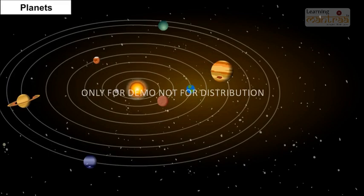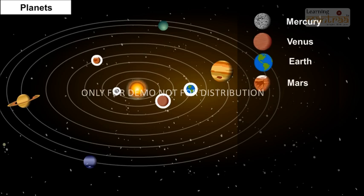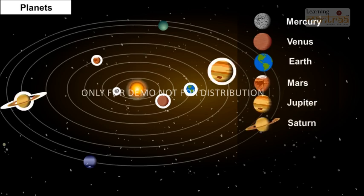The eight planets in our solar system in order of their distance from the Sun are Mercury, Venus, Earth, Mars, Jupiter, Saturn, Uranus, and Neptune.